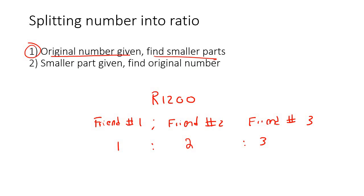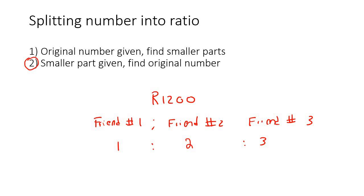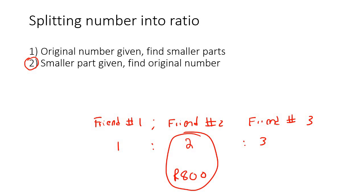You need to find the smaller parts. But then at a later part of this lesson, we're going to do the more challenging kind of example — number two — where they give you the smaller part. So maybe they tell you that this friend got 800 Rand, and from that you need to work out what the original number is. They might even ask what the other people get. That is what this lesson is all about. So let's get started with section number one.